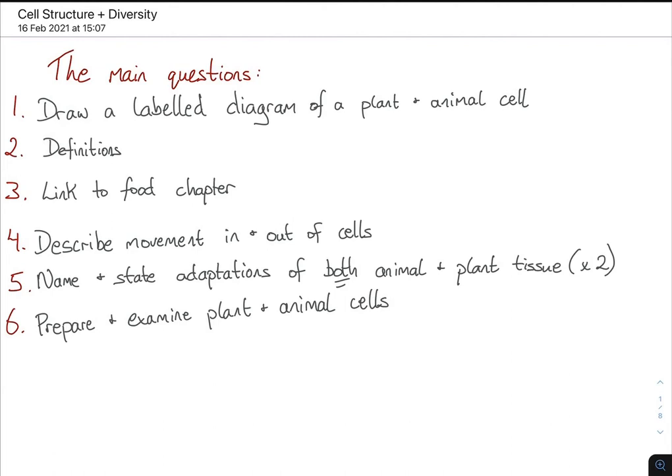Definitions come up very similar to what you would learn from the junior cycle. There is a very clear link to the food chapter, which comes up pretty much every year. Cell structure doesn't come up every year but it comes up fairly frequently, and it also links to diffusion and osmosis — so you may not have heard those terms just yet but you will shortly — and that's the movement in and out of cells. Then we move on to the adaptations.